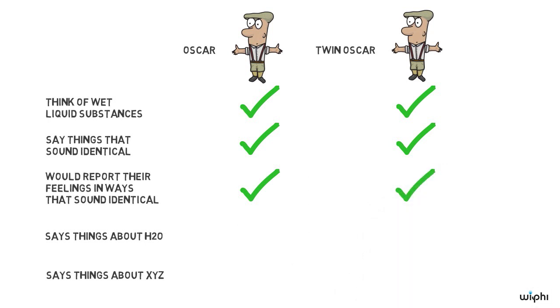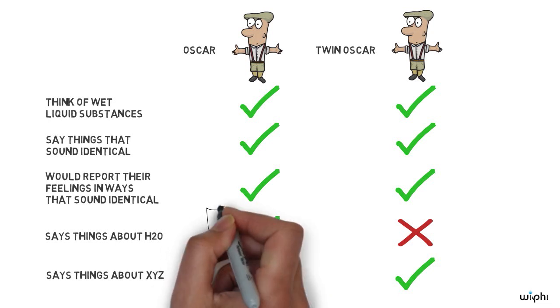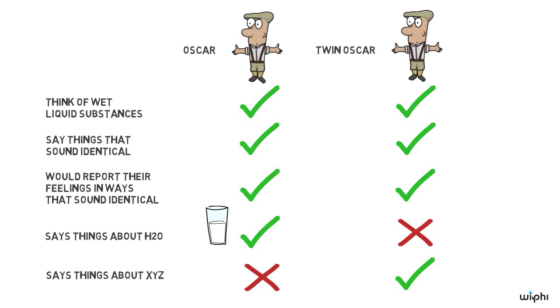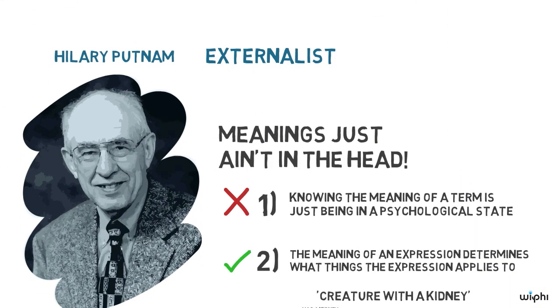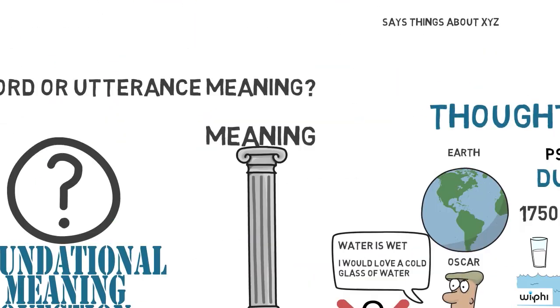Yet, Putnam argues they're different. Oscar says things about water, the H2O stuff, while Twin Oscar has thoughts and says things about twin water, the XYZ stuff. Oscar asks for a glass of H2O, while Twin Oscar asks for a glass of XYZ. Since they are psychologically identical, but mean different things when they make the same sound, water, meaning cannot be wholly internal. Meanings, Putnam argues, just ain't in the head.